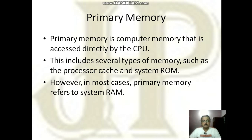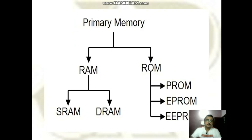Random access memory is equivalent to primary memory. Primary memory is of two types: RAM and ROM. RAM is further divided into two types: SRAM and DRAM. ROM we will discuss in another video in detail.